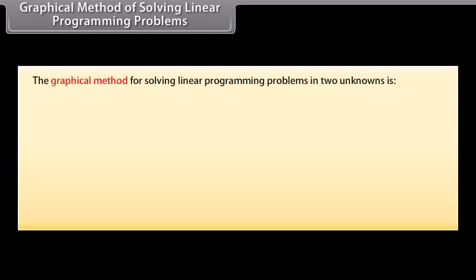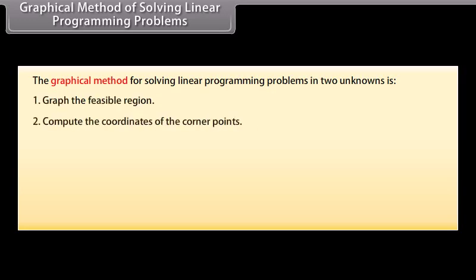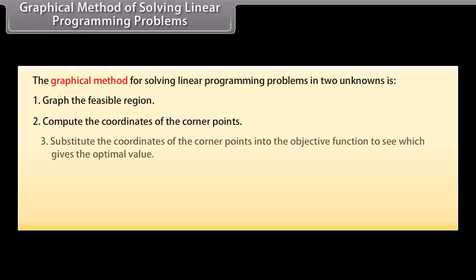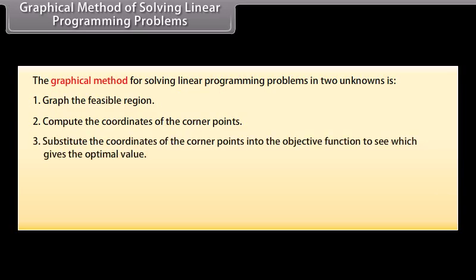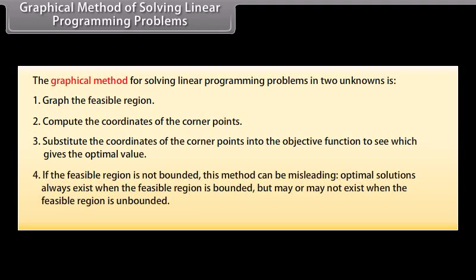The graphical method for solving linear programming problems in two unknowns: 1. Graph the feasible region. 2. Compute the coordinates of the corner points. 3. Substitute the coordinates of the corner points into the objective function to see which gives the optimal value. 4. If the feasible region is not bounded, this method can be misleading — optimal solutions always exist when the feasible region is bounded, but may or may not exist when the feasible region is unbounded.